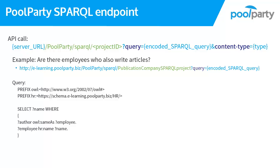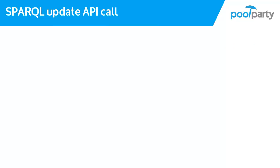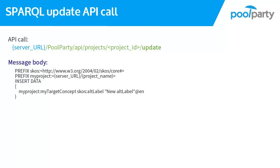To run SPARQL queries that change your data in a programmatic way, you need to use the Update API call, which lets you run a SPARQL query in its body. This is a POST request method which requires the project UUID to be part of the URL call, and in its body you can post the SPARQL query itself. Let's run an example using our favorite REST console.